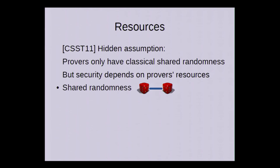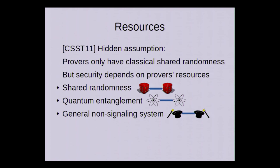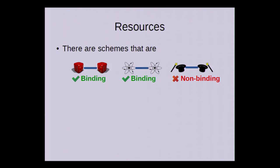However, the security of bit commitment schemes depends on the resources that the dishonest provers have. For example, we can consider shared randomness as we did before, also quantum entanglement, or general non-signaling systems, which are basically only restricted by the non-communication condition. So basically, if we want to say that a bit commitment scheme is secure based only on the non-communication assumption, then it has to be secure in that third setting.